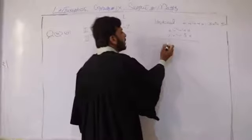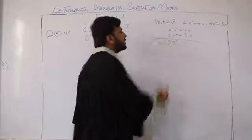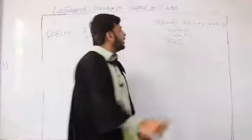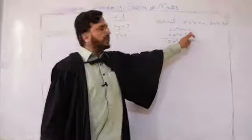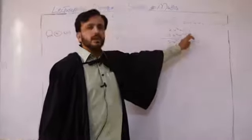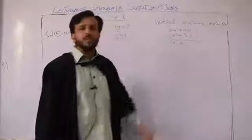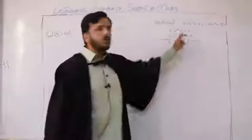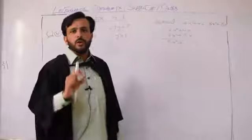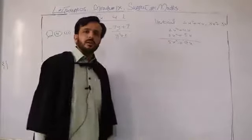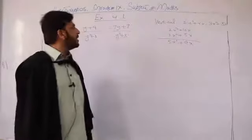3 plus 2 gives 5x square. Then for the x terms: the coefficient of the first is 4 and the coefficient of the second is 5. We add only the coefficients and keep the variable as it is: 4 plus 5 is 9x. So the result is 5x square plus 9x. This was the vertical method. The other method is the horizontal method.